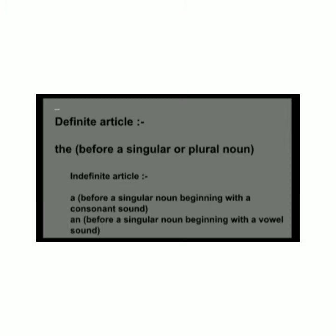Indefinite articles — 'a' is used before a singular noun beginning with a consonant sound. 'An' is used before a singular noun beginning with a vowel sound. The vowels are A, E, I, O, U.